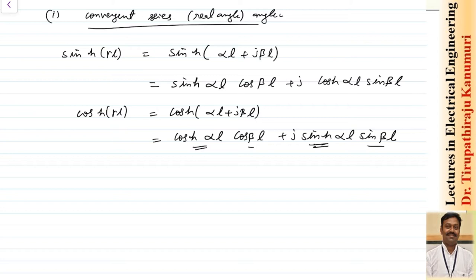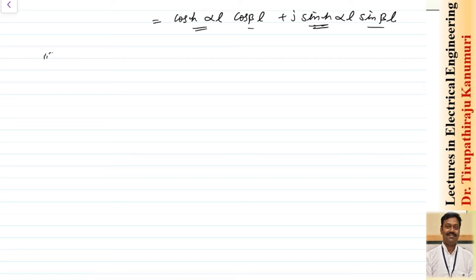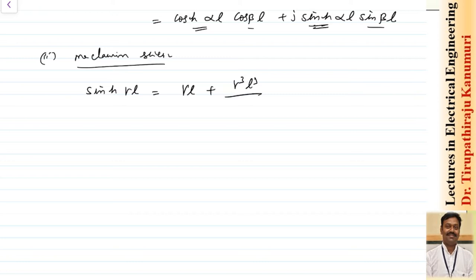The easier and more common method is the second method, called the Maclaurin series. In the Maclaurin series, sinh(γl) can be expanded as γl + (γl)³/3! + (γl)⁵/5! and so on.